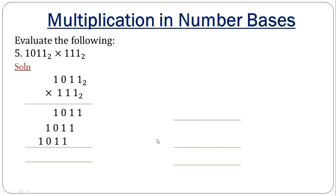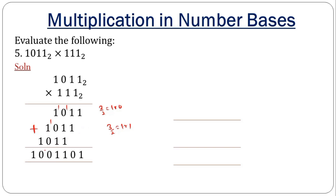After that, the next step is to add what you have gotten. We bring down 1 here, then 1 plus 1 is 2. Since we are in base 2, we divide by 2, giving 1 remainder 0. Record the remainder and carry the 1. Then 1 plus 1 plus 1 is 3; divide by 2 gives 1 remainder 1. Record 1 and carry. Again 1 plus 1 plus 1 is 3, which is 1 remainder 1. Then 2 divided by 2 is 1 remainder 0, again 1 remainder 0. Bring down the last 1, and that is our solution.